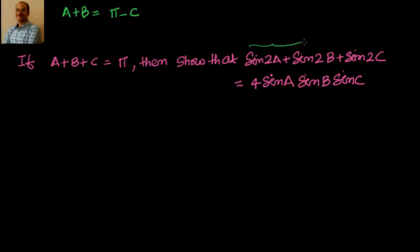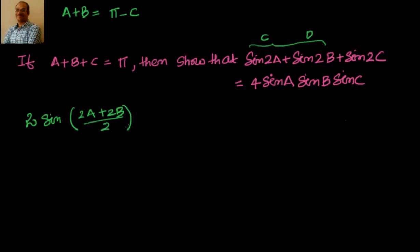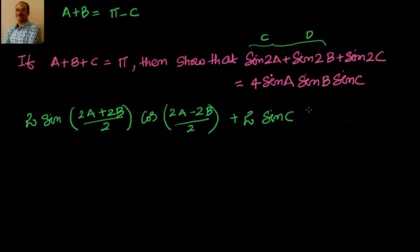The first two terms are in the form of sin c plus sin d. The formula for that is 2 sin((c+d)/2) cos((c-d)/2). So I write 2 sin((2a+2b)/2) cos((2a-2b)/2), and sin 2c equals 2 sin c cos c.